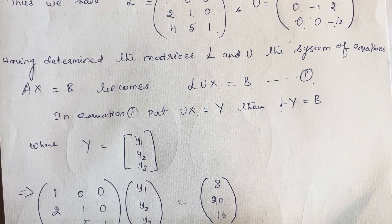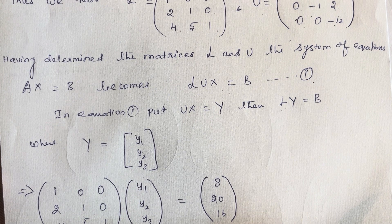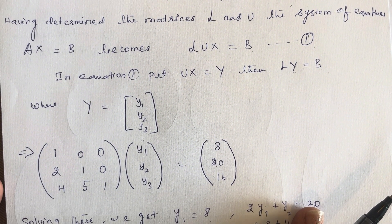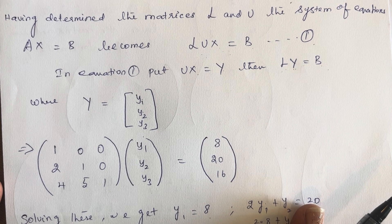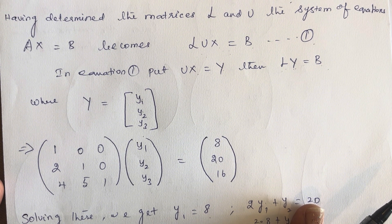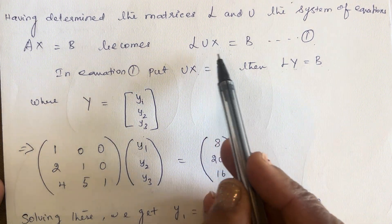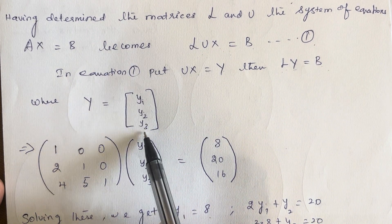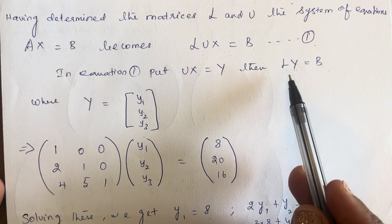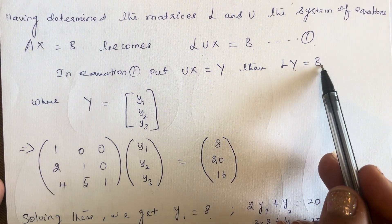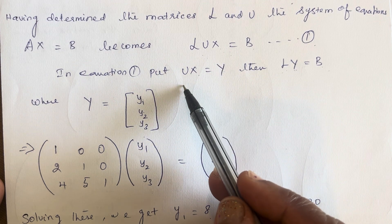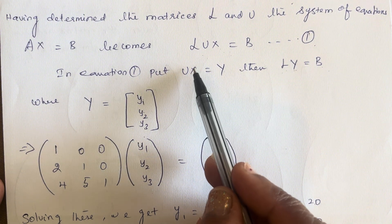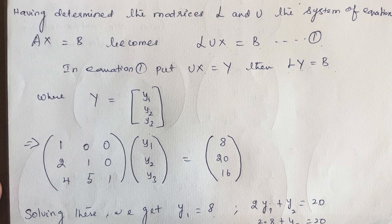Having determined the matrices L and U, the system AX = B now becomes LUX = B. Let us put UX = Y, so by substituting, we get LY = B, where Y is the column matrix [Y1; Y2; Y3]. The reason for this substitution is: once we find Y using L and B, we can go back and substitute into UX = Y. Since we already know U, it is then easy to find X.